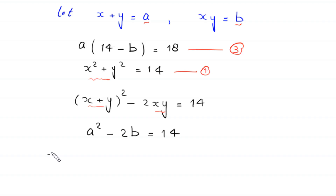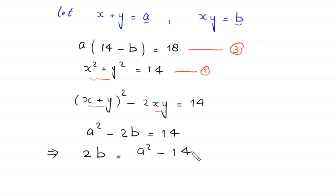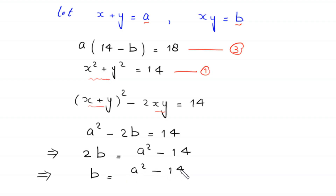Moving terms, we get 2b equals a squared minus 14, and dividing both sides by 2 gives b equals a squared minus 14 over 2. Call this equation 4.